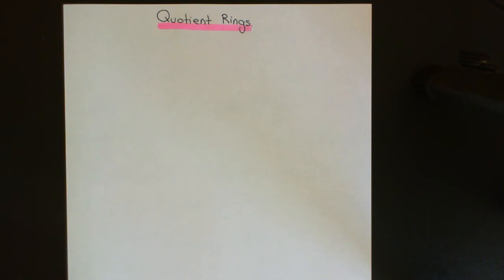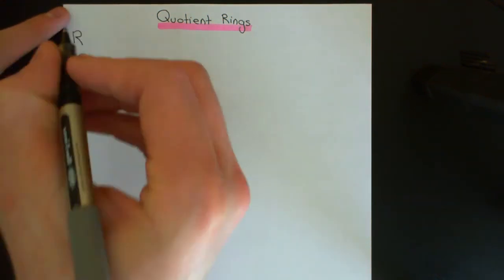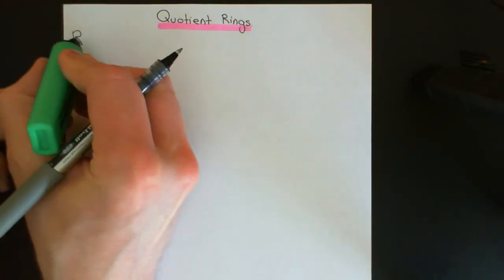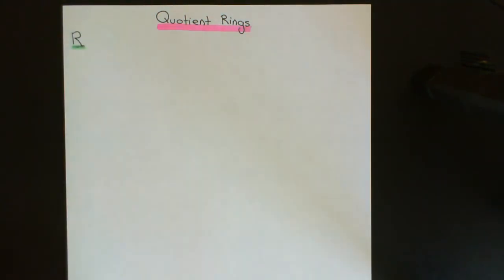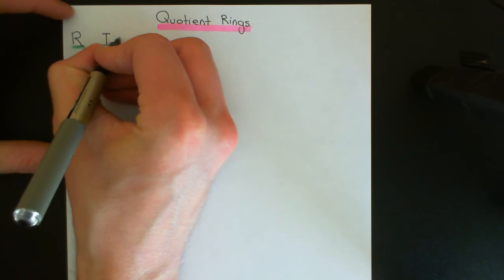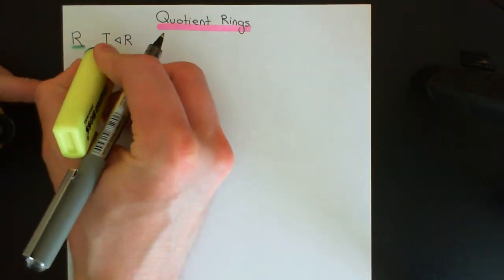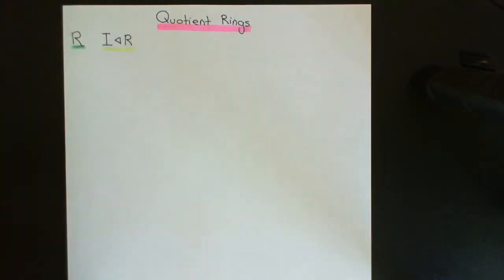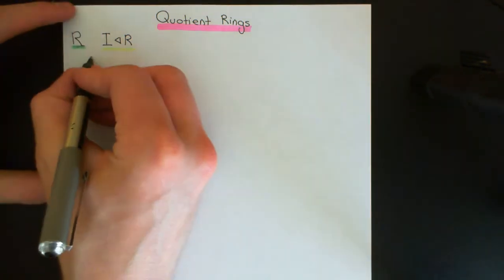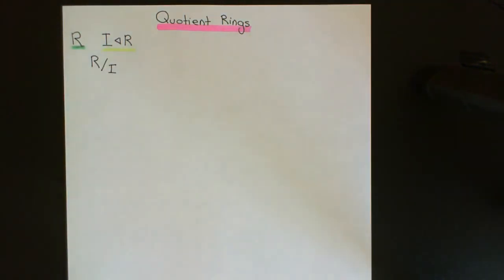In ring theory, the analogous thing to a normal subgroup is an ideal. So what we're going to be doing is dividing a ring by an ideal. We're going to start with some arbitrary ring R, which we will insist is a commutative ring. Let's say capital I here is an ideal of our commutative ring R. We'll focus on how to quotient R by the ideal I to arrive at a new ring called the quotient ring, denoted R over I or R divided by I.